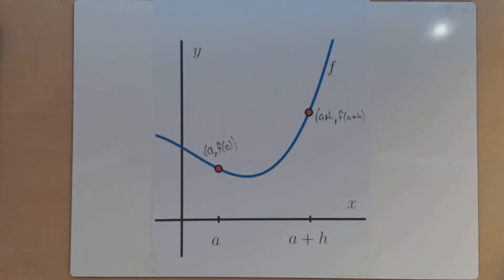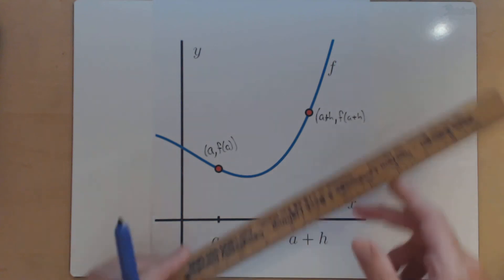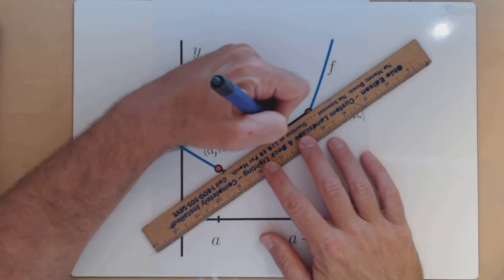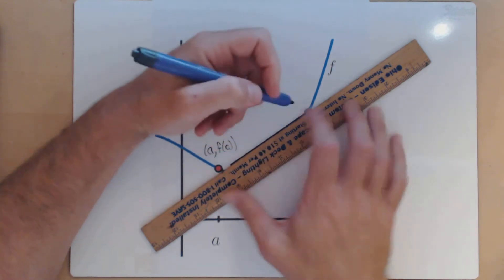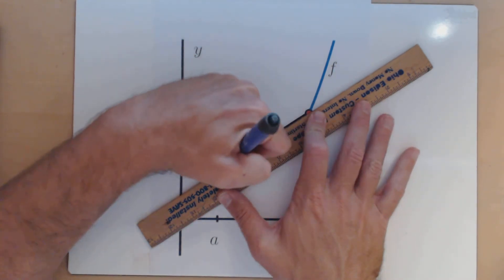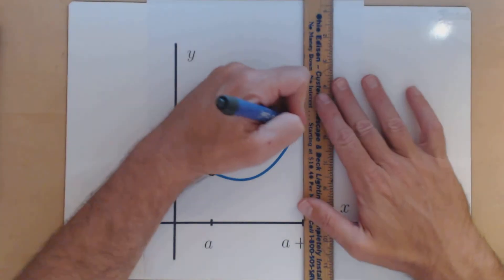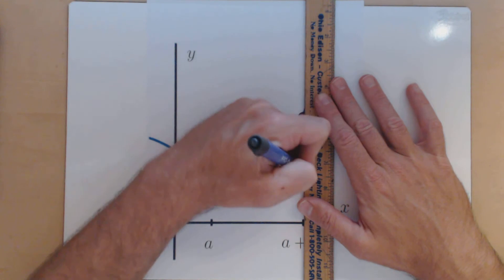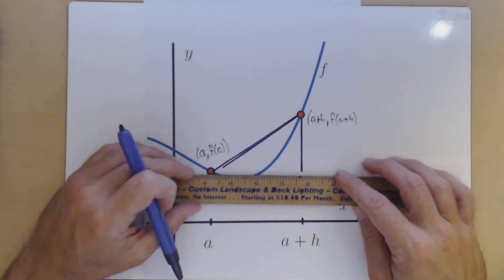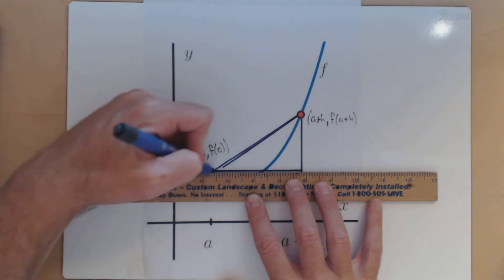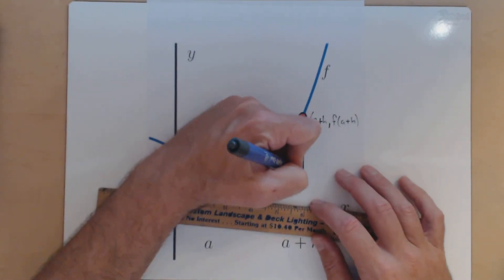Now, part b actually asks us to draw a line, or excuse me, a right triangle whose hypotenuse is this line. So let's get our triangle in here. We'll put in two legs, one straight down, one straight across, and there's our right triangle connecting the two points.